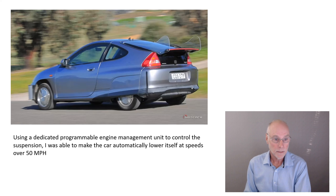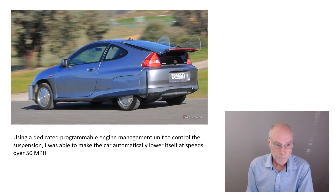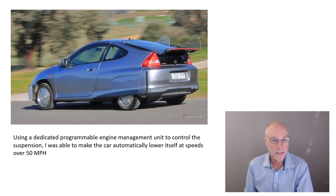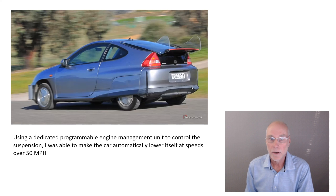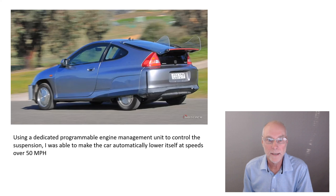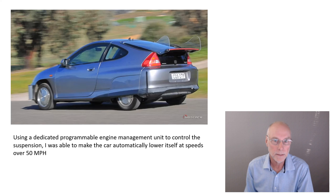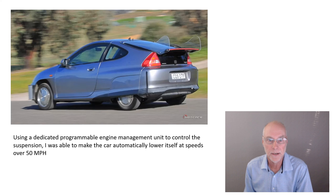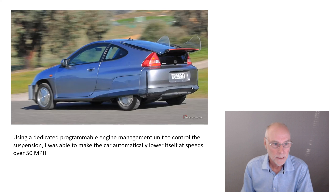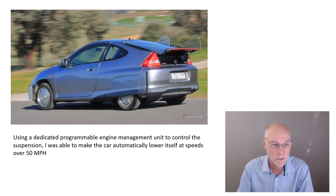Here's a car that I built a few years ago — it's now come off the road, all the Honda Insight fans will be disappointed to know. This is a car that I fitted with air suspension, and it automatically lowers itself over 50 miles an hour, 80 kilometres an hour. So it decreases aerodynamic drag by automatically lowering the suspension, which obviously decreases the exposed frontal area of the tyres.